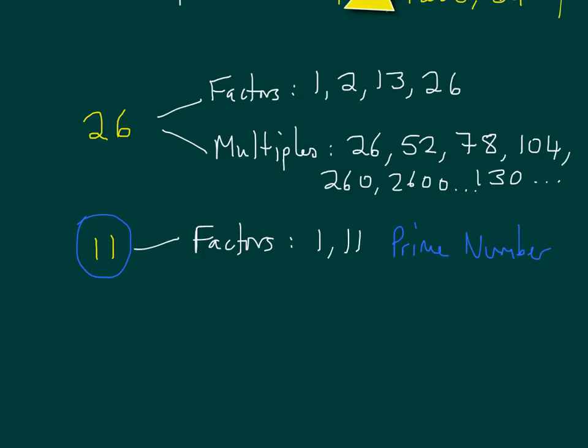And the first few prime numbers are 2, 3, 5, 7, 11, 13. Now, all of these numbers in this list are prime numbers, because they only have two factors, 1 and itself. And actually, the list of prime numbers go on forever, too.